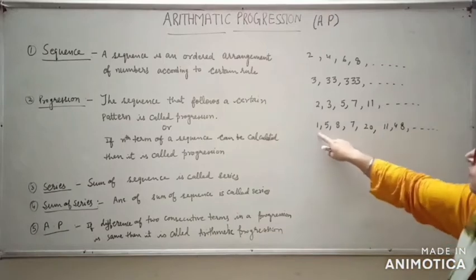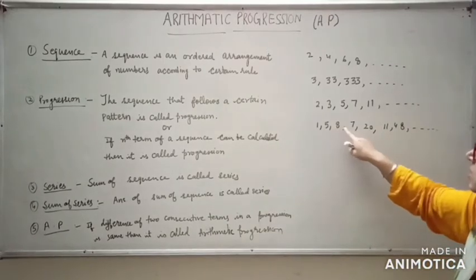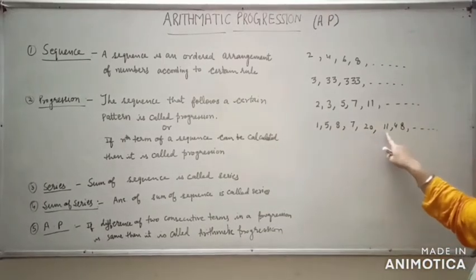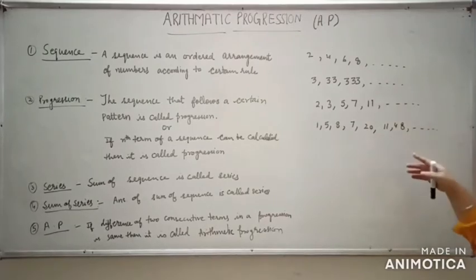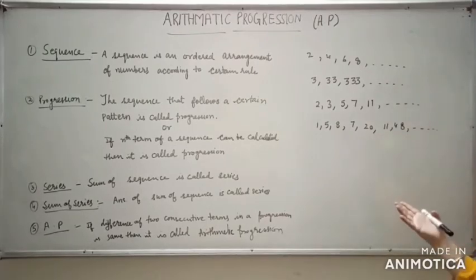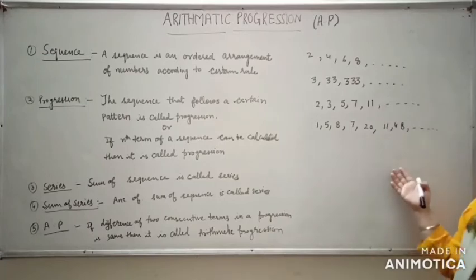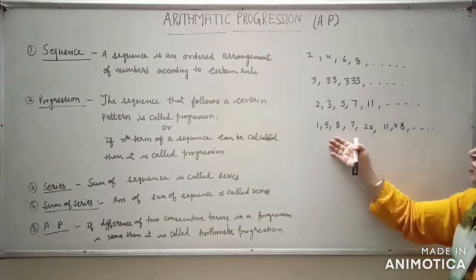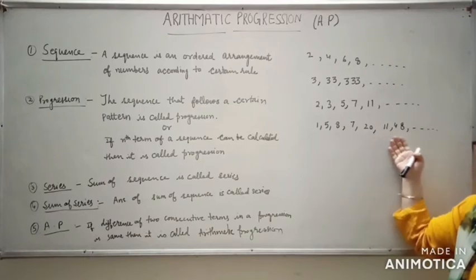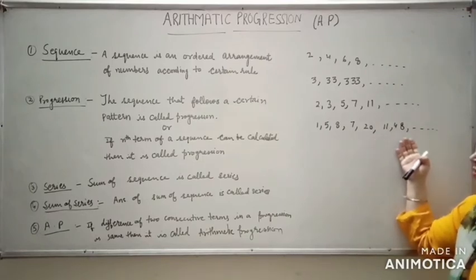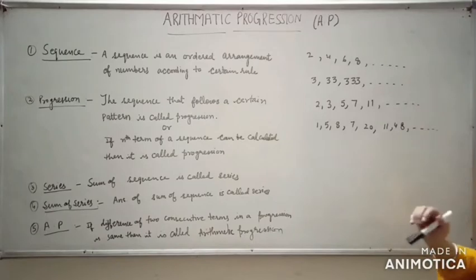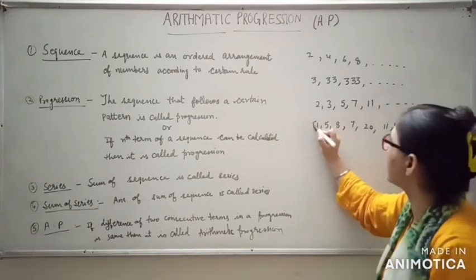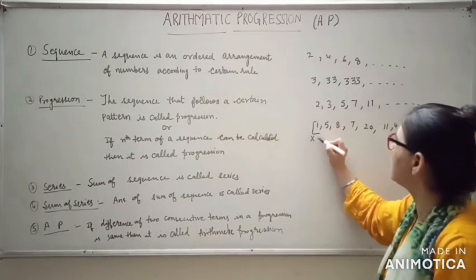Now consider 1, 5, 8, 7, 20, 11, 48. Try to find out any rule that has been followed in this set of numbers. I am not able to find out any rule by which these numbers have been written. There is no particular rule followed to write these numbers. Therefore, this is not a sequence.